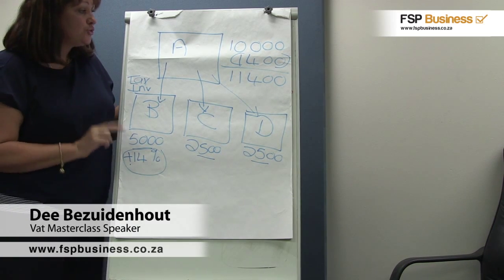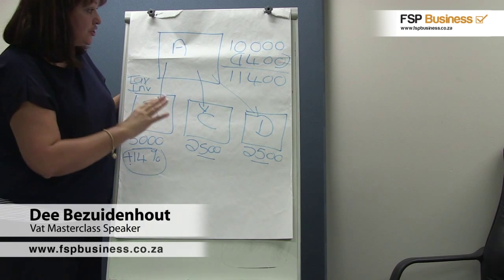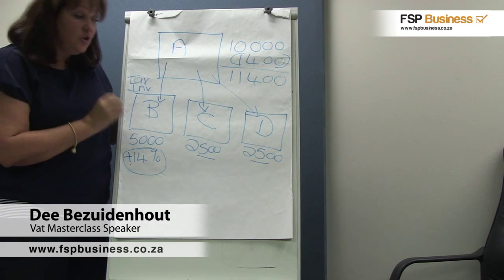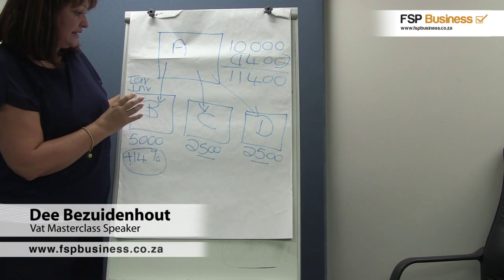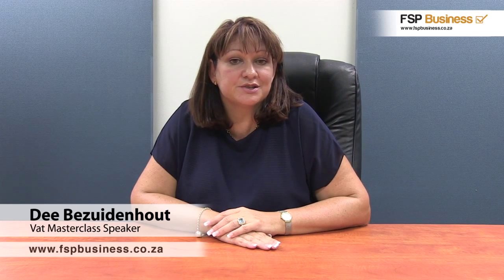SARS published two written rulings confirming this whole argument, and even though the rulings have been withdrawn by SARS, the law hasn't been changed and the legal explanation remains the same. There are three more cost recoveries that work in a similar way: salaries recovered, costs for petrol or diesel recovered, and entertainment costs recovered.